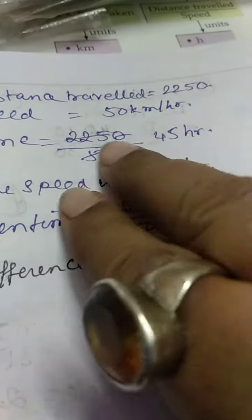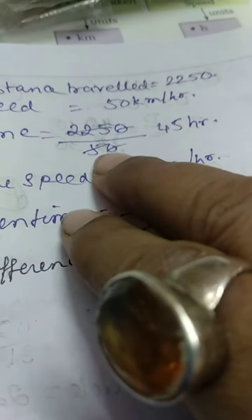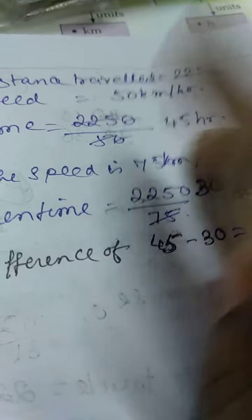Distance traveled is 2250 km at 50 km per hour. We divide it by 50, we get 45 hours.